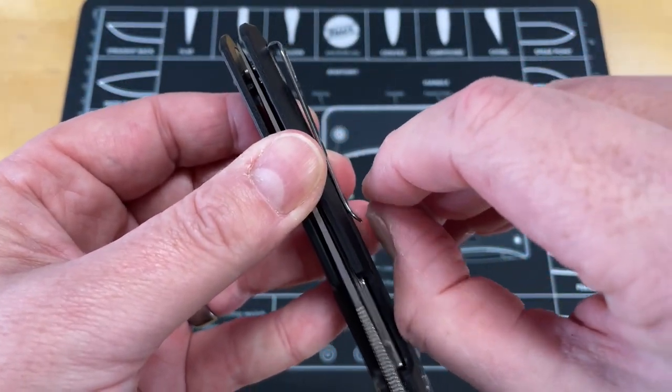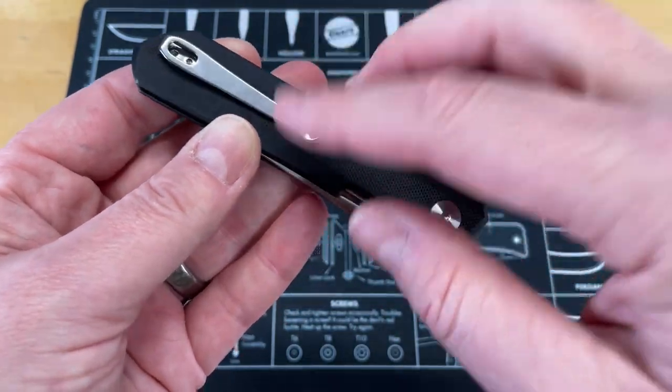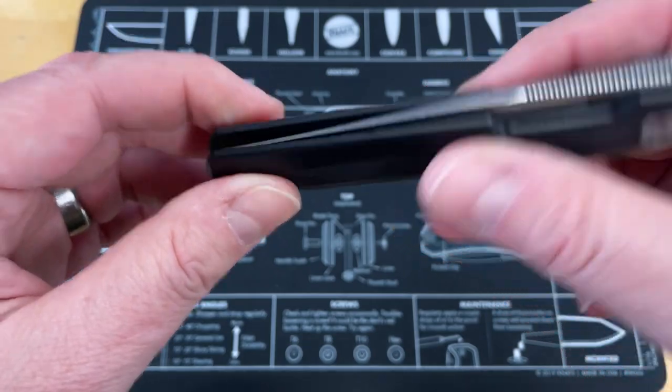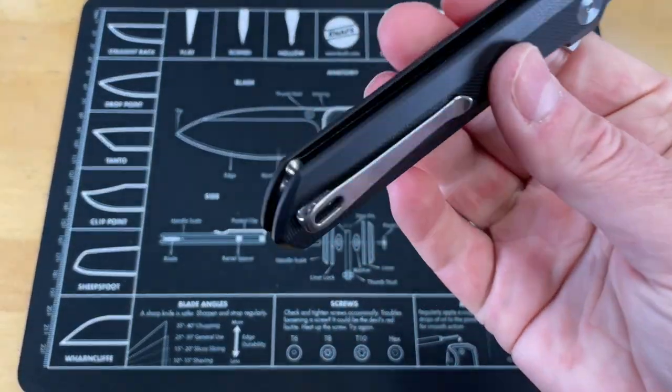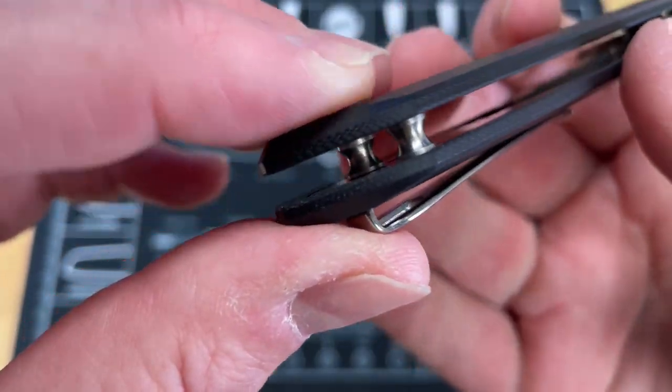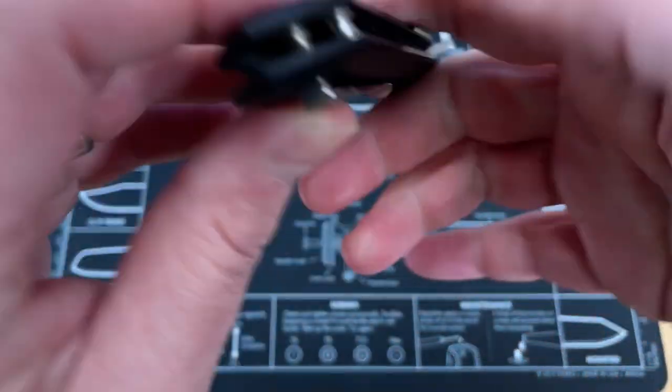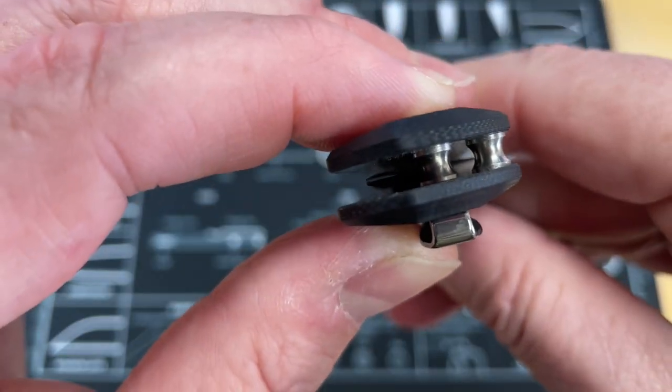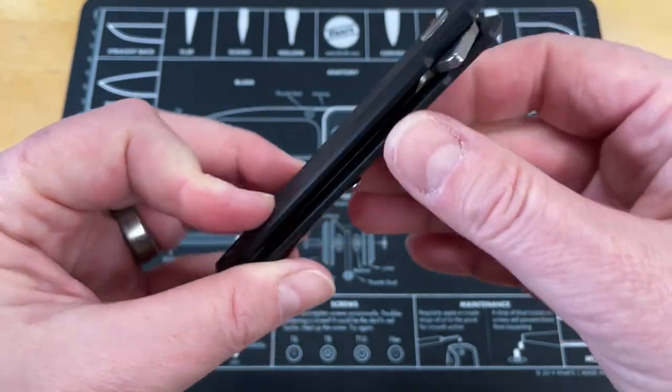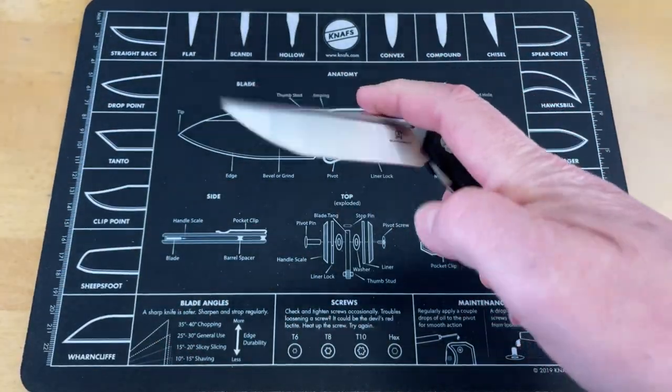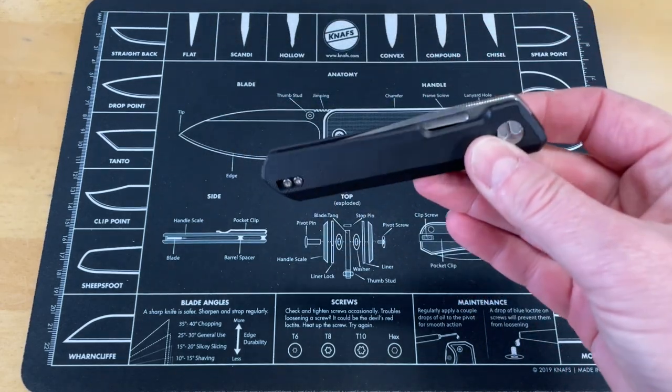That allows the tension to be spread out across the length, so you get really good pocket retention and a fairly deep pocket clip that just absolutely does not form a hot spot. You've got an extra post here that you can throw your lanyard on if you want. Really good jimping on the flipper tab. The action on this for a $54 knife is really good, just shy of drop shut.